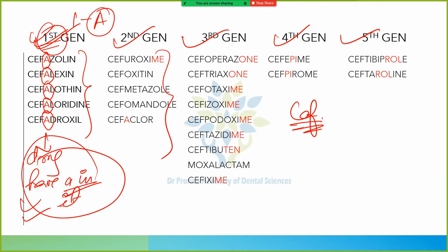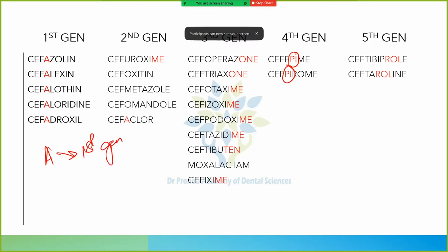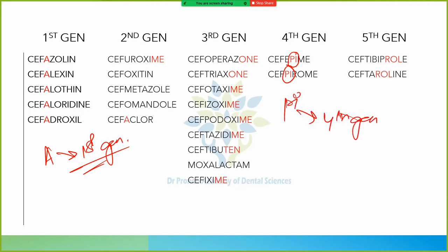For the fourth generation, look for 'pi' in the drug name. If there is 'a,' it is first generation; if there is 'pi,' it is fourth generation. For the fifth generation, look for 'role' in the drug name — 'role' indicates fifth generation.